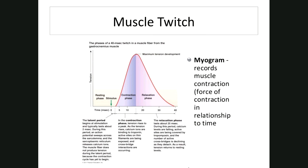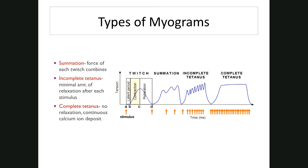Types of myograms: first is wave summation. A single twitch is one contraction-relaxation cycle. With summation, a second stimulus is applied right after the refractory period — as the muscle starts to relax, it's stimulated again, giving a more forceful contraction. As stimuli are applied faster, there's less time to relax and you get wave summation, where each successive contraction is more powerful, eventually leveling off.